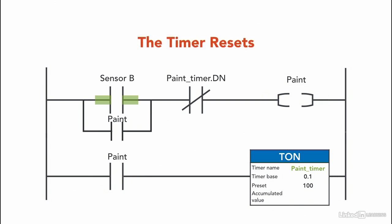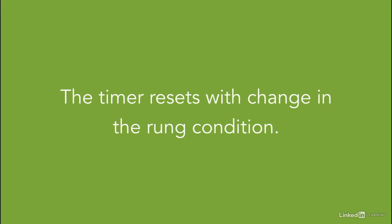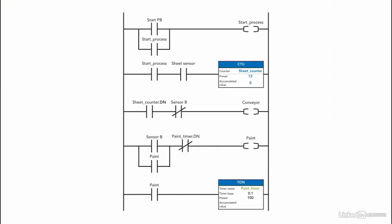At the same time, the timer resets. Remember, the timer resets at the rung transition between true to false. The timer resets with a change in the rung condition. This is how the program looks so far.